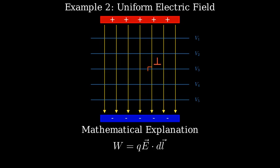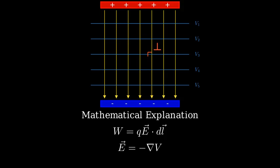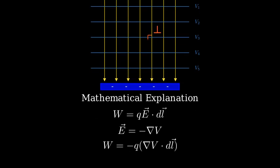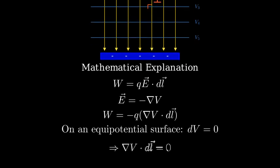We also know that the electric field is the negative gradient of the potential: E equals negative gradient of V. When we combine these equations, we get W equals negative Q times gradient of V dot dL. For motion along an equipotential surface, the potential remains constant, so the change in potential dV is zero. This means that gradient of V dot dL equals zero.